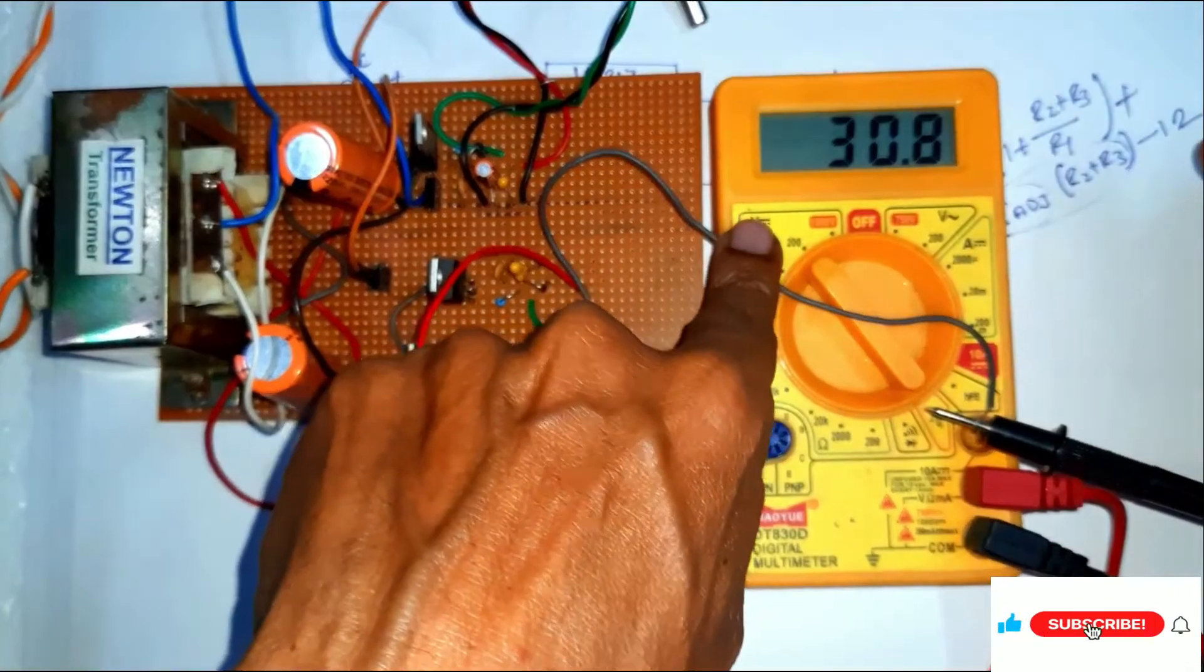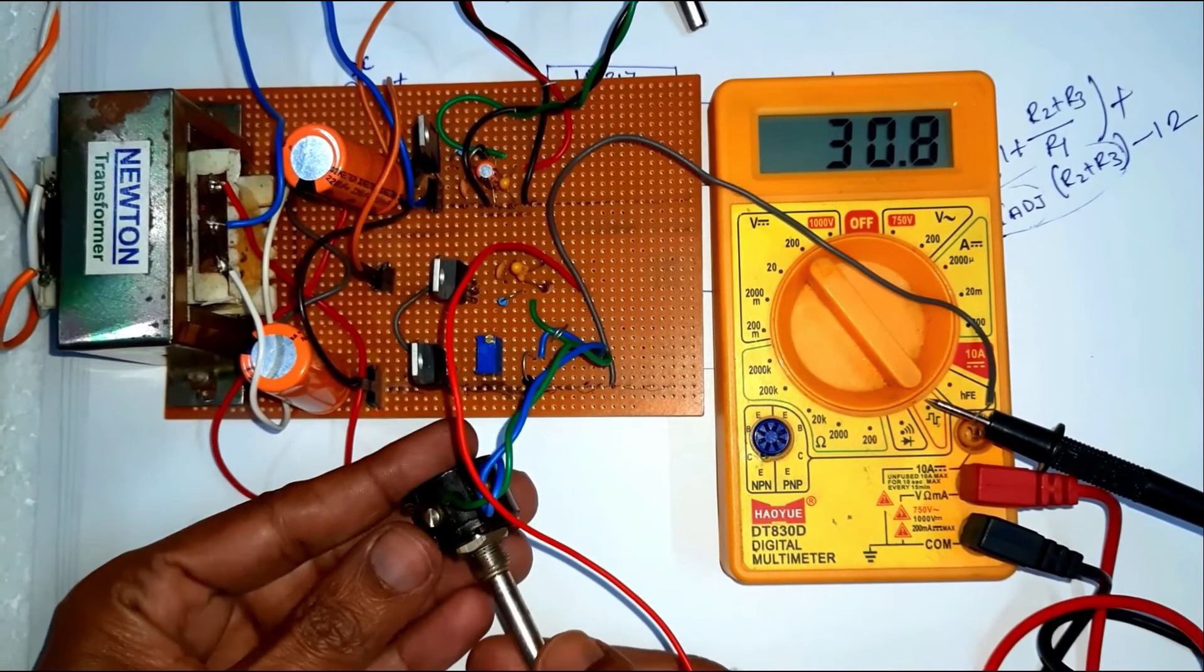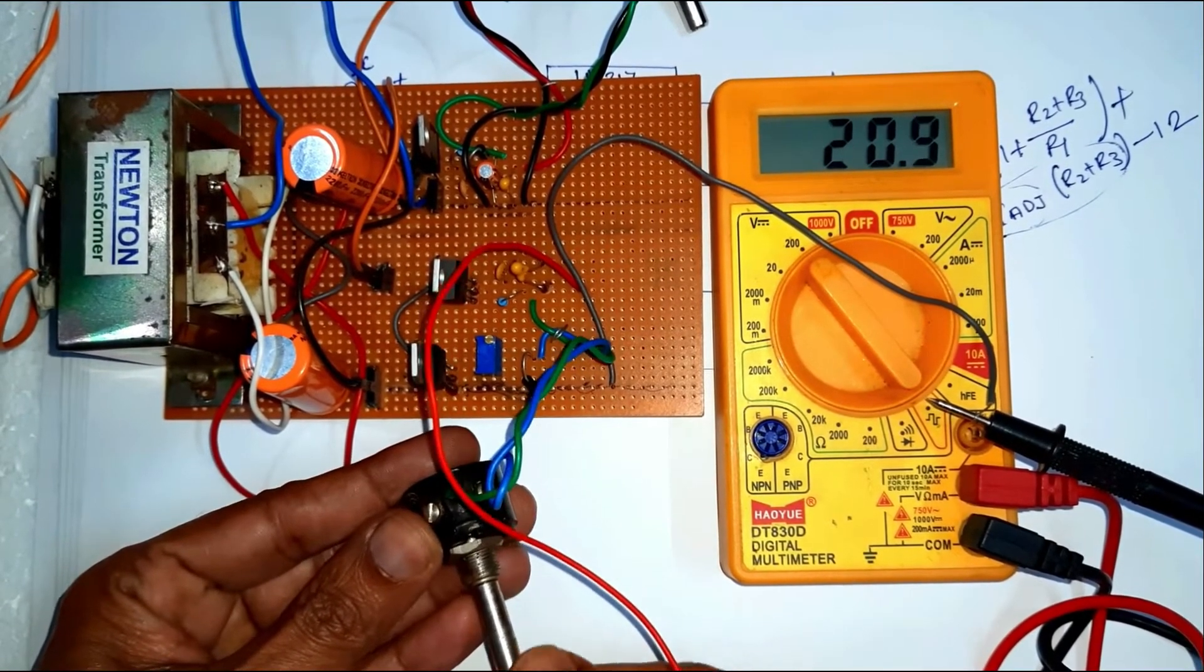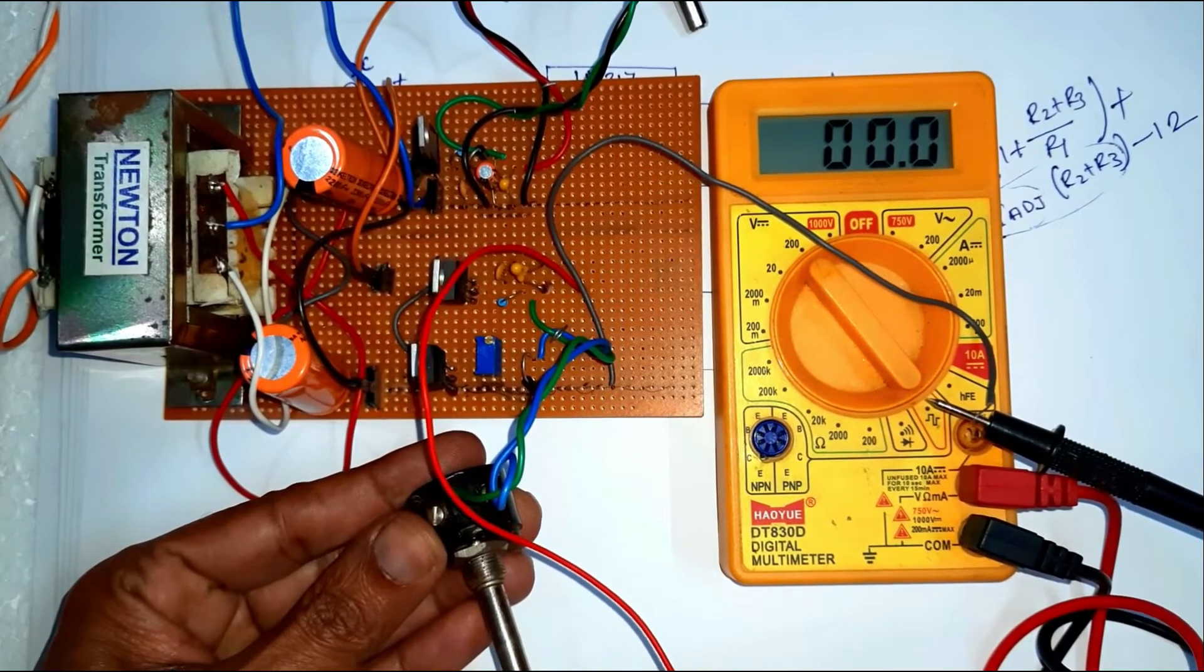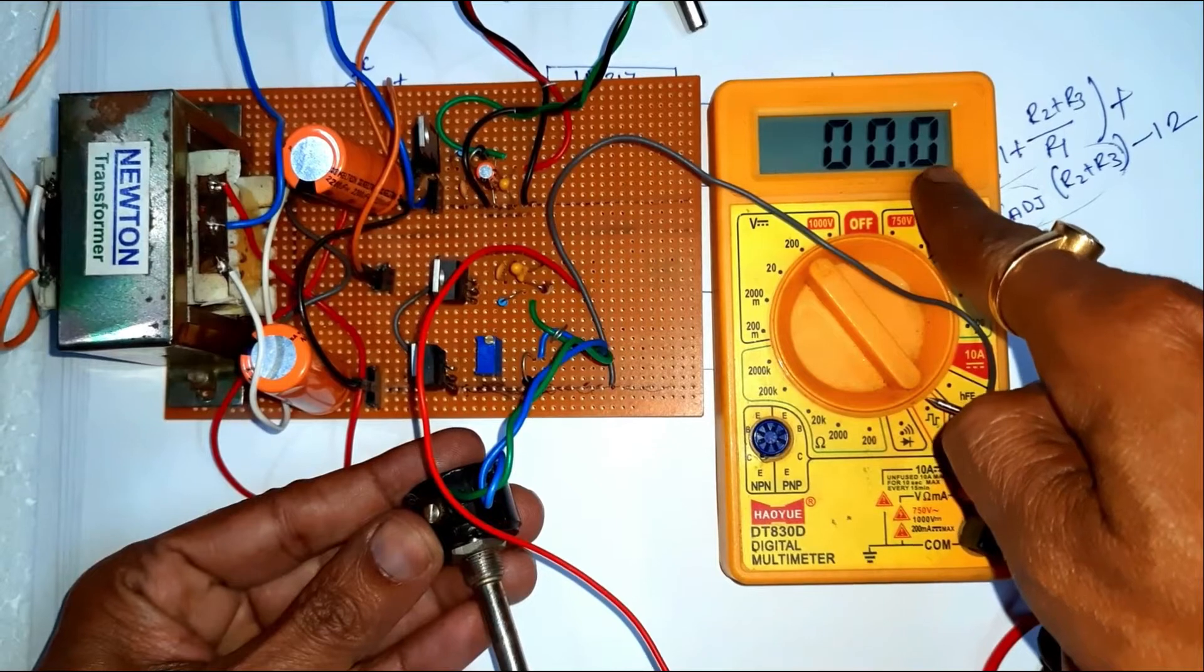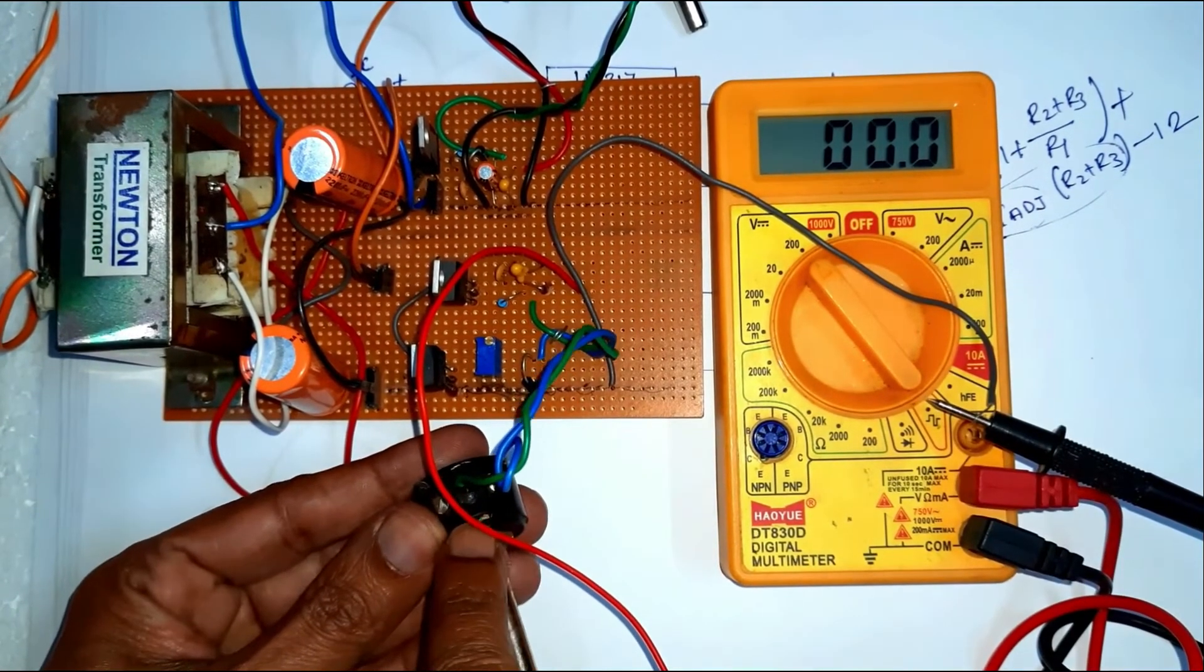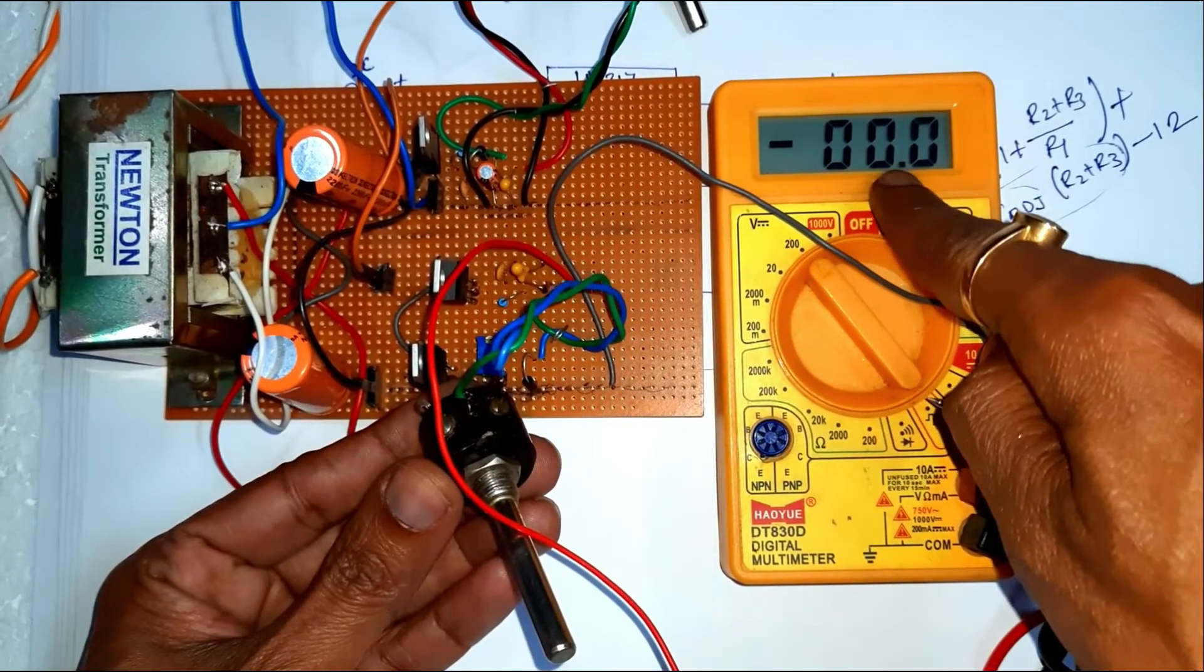Just measure the resistance R2 and this is 0 volt. So, minimum initial condition, minimum resistance of R2, output voltage is 0 volt.